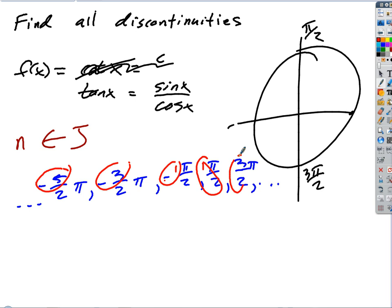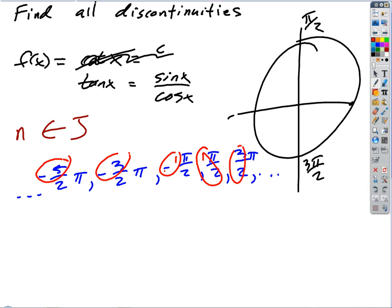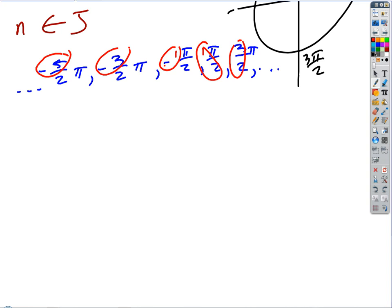So one way of saying this is the discontinuities would be at the odd integer multiples of pi over two, right? So all we've got to be able to say to say the places where it's discontinuous is that odd number multiples of pi over two.